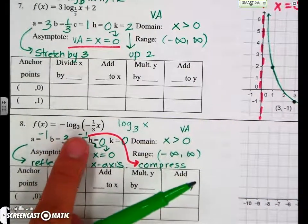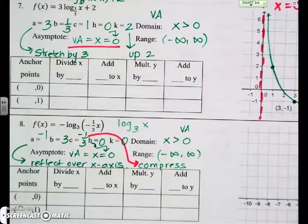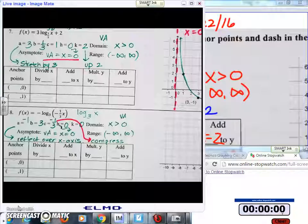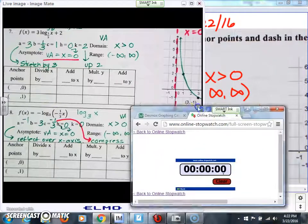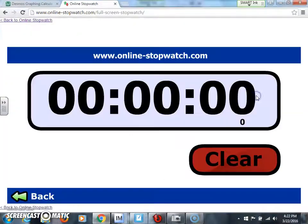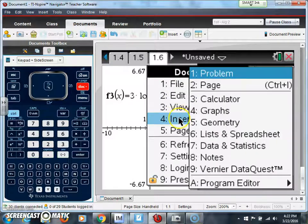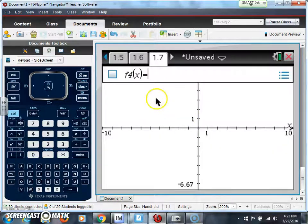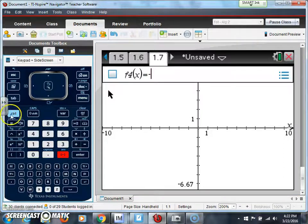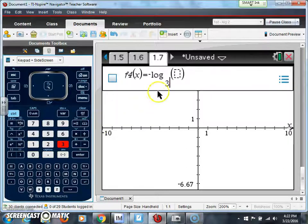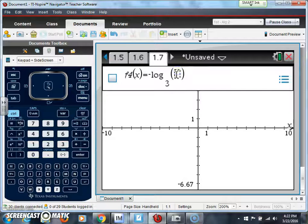Go ahead and graph that into your calculator: negative log base 3 of negative 1 third x. If you were at home doing it on the Desmos calculator, if you don't know what happened, let's do it on the calculator then. I'm going to insert a new document, a new graph page. I'm going to put negative, control, 10 to the power of x, log base 3. Inside the parentheses, I'm going to put negative 1 divided by 3, and then an x. So your function should look something like this.